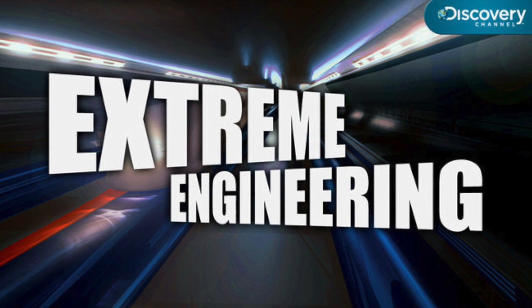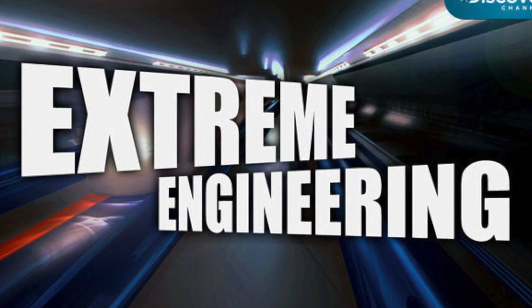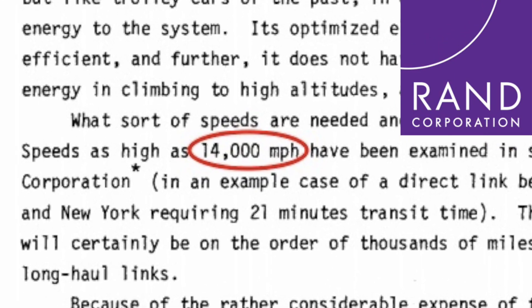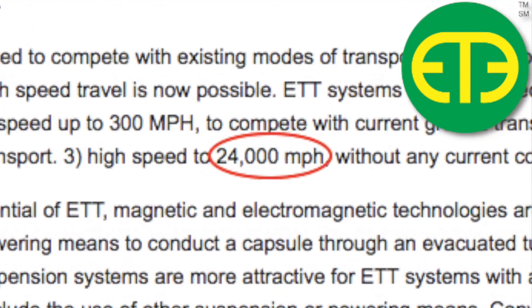According to a documentary by Extreme Engineering, tube travel could reach speeds of 5,000 miles per hour, but Rand Corporation says 14,000, and ET3's patent says 24,000. So why are these estimates so far apart?